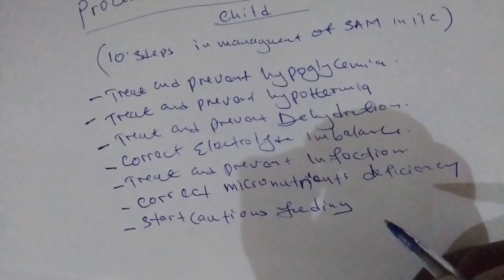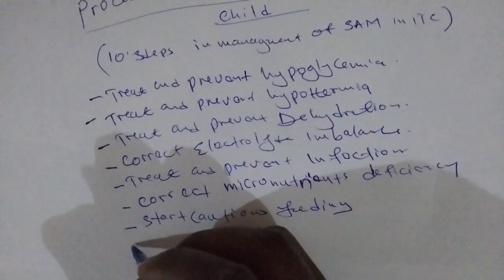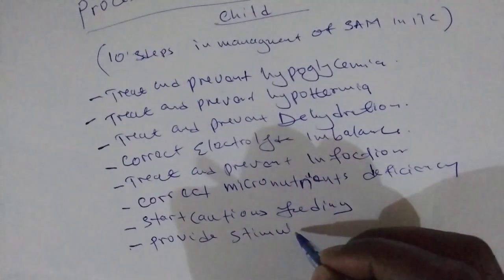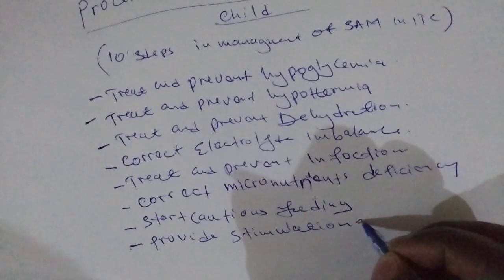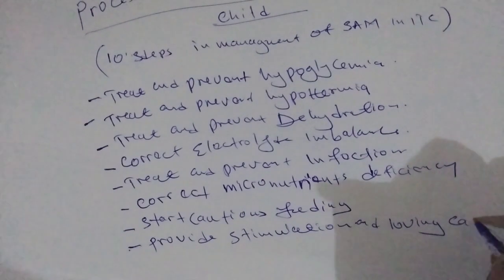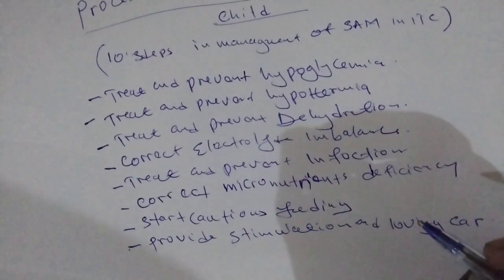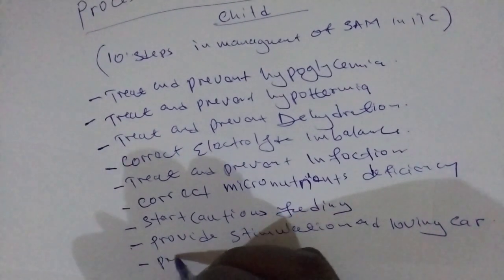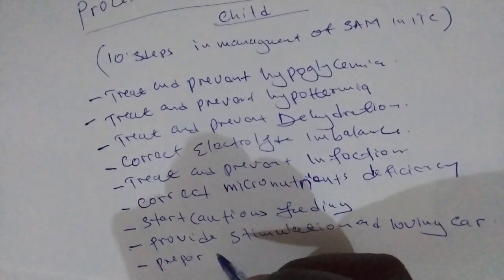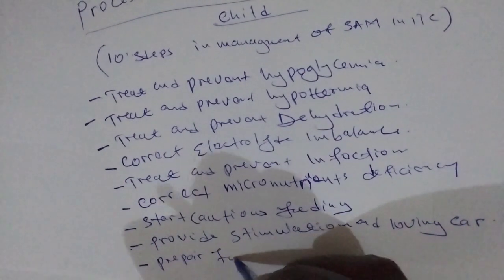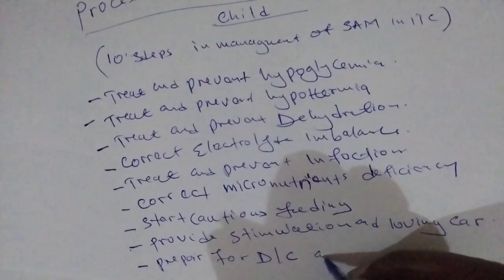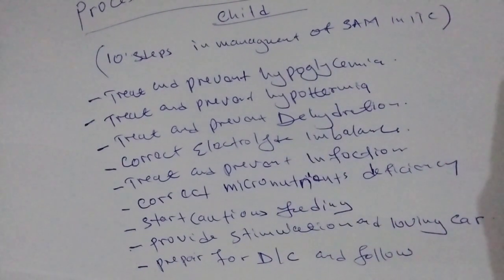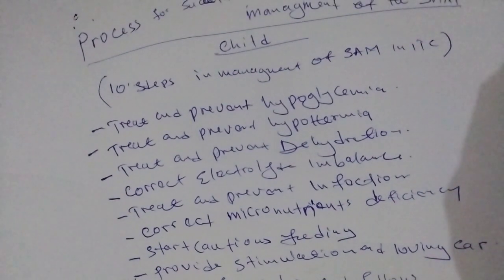Step number nine: we are going to provide stimulation for this baby. Step number ten: we are going to prepare this mother. Those are the ten steps in management of severe acute malnutrition in ITC.